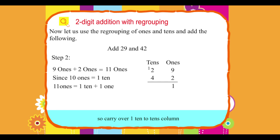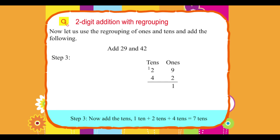Ones, tens. Step 3. Now, add the tens. One ten plus two tens plus four tens equals seven tens.